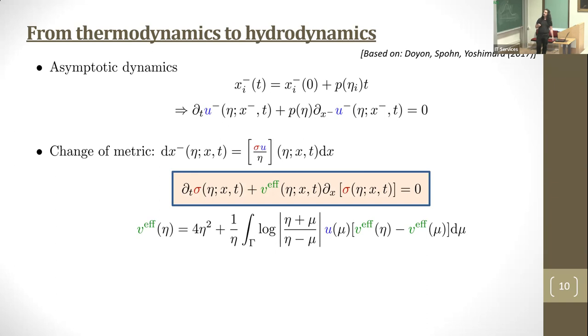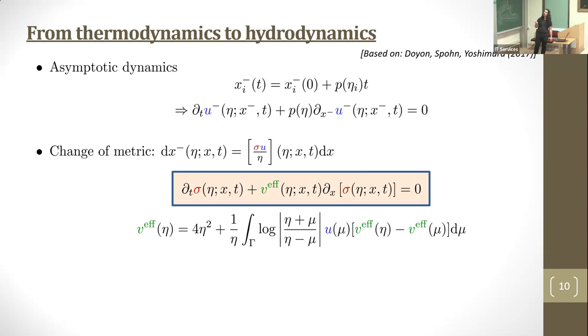If you apply the change of metric, you get this equation for sigma with an effective velocity. This is very natural—the group velocity plus modifications due to all the phase shifts that the soliton incurs while moving within the gas. This is essentially a solid angle. This equation is compatible with the one I showed earlier, except sigma diagonalizes the dynamics, working as some continuum of remaining invariants. These two equations are exactly the kinetic equations for soliton gas derived by Gennady and discussed in the previous two talks. We can see there are many parallels between those two theories.